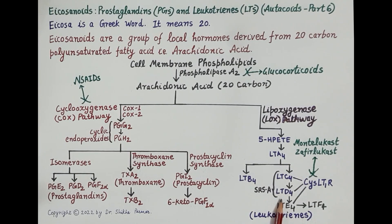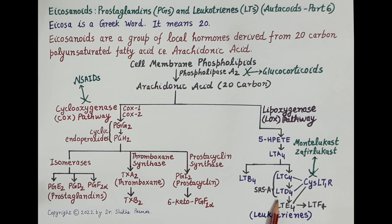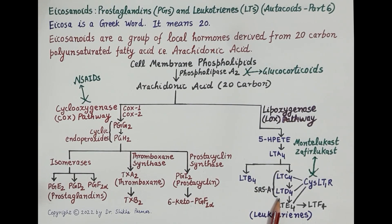Cysteine leukotrienes — LTC4 and LTD4 — are produced during the anaphylactic (allergic) reaction and are therefore called slow-reacting substances of anaphylaxis (SRS-A). These leukotrienes induce inflammation, increase vascular leakage (plasma escaping into tissues), cause bronchoconstriction, and increase mucus production in the bronchial tract.